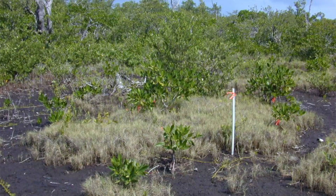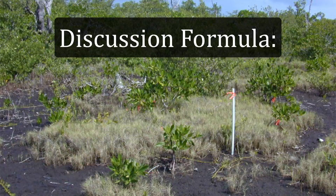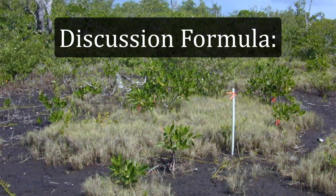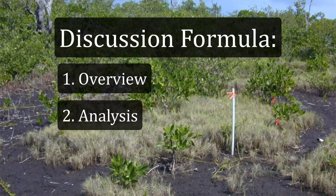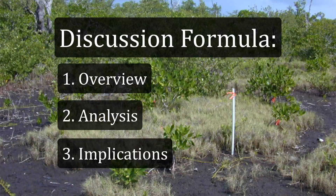Let's now consider how the discussion is structured and look at an example. Similar to the introduction, there is a general formula for writing the discussion. The discussion should contain three basic parts: a brief overview section to reorient the reader, a critical and detailed analysis of the findings, and implications or significance of the work.